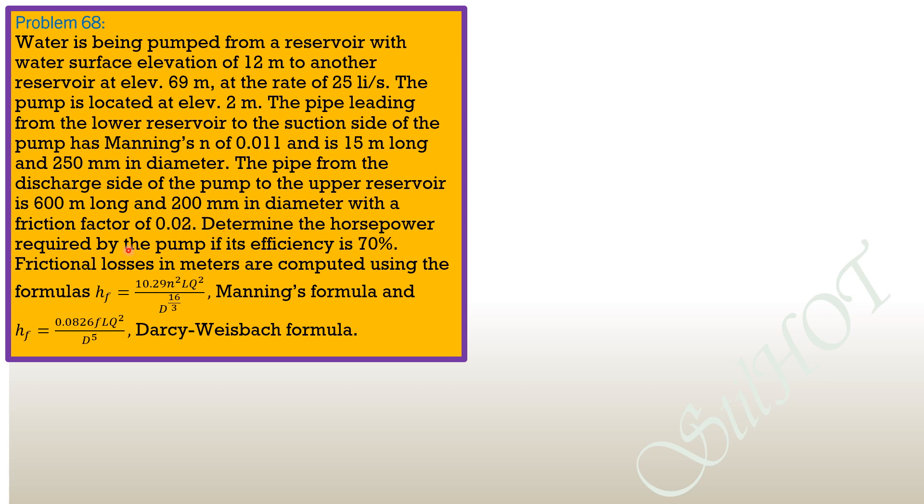The pipe from the discharge side of the pump to the upper reservoir is 600 meters long and 200 mm in diameter with a friction factor of 0.02. Determine the horsepower required by the pump if its efficiency is 70%. Frictional losses in meters are computed using Manning's formula: hf = 10.29n²Lq²/D^(16/3), and Darcy-Weisbach formula: hf = 0.0826fLq²/D⁵.